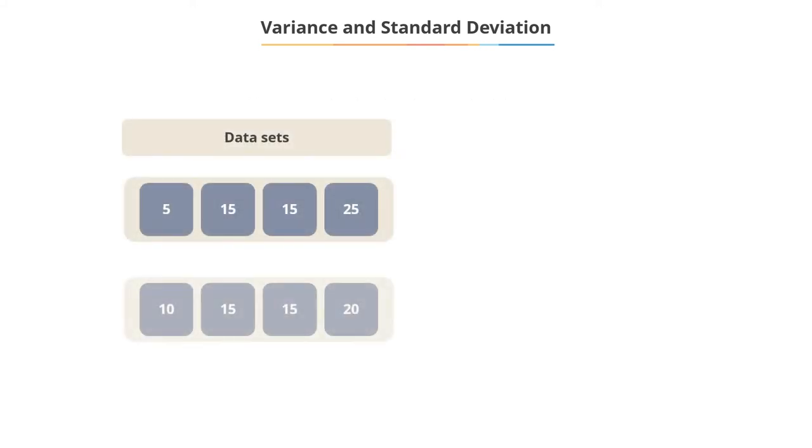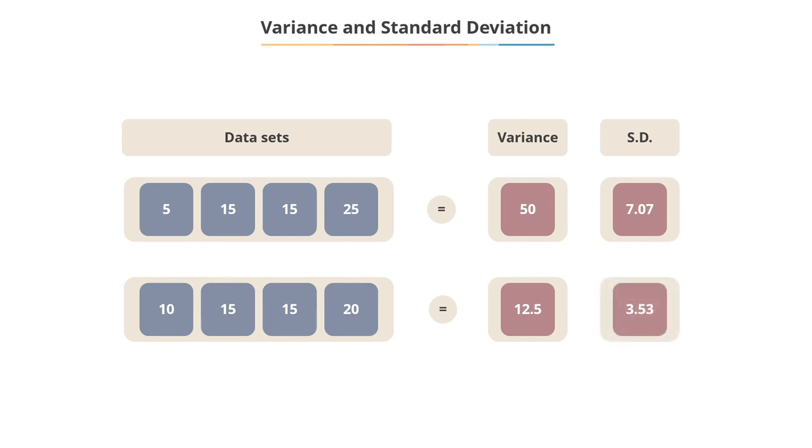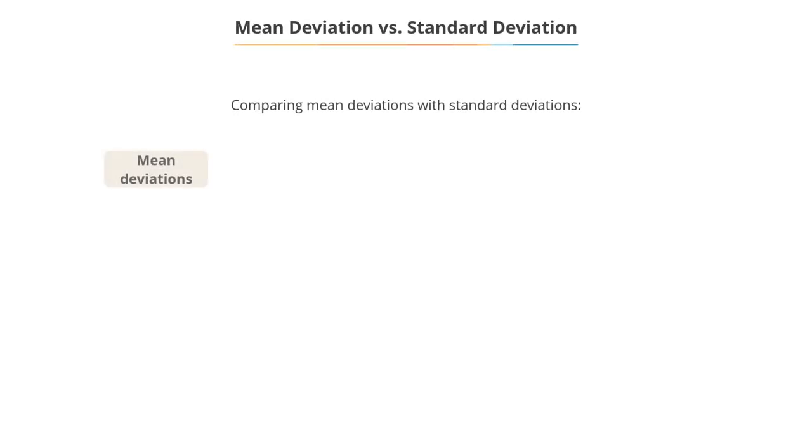If you observe, you will see that the variances of the two data sets are 50 and 12.5. The standard deviations are therefore 7.07 and 3.53.